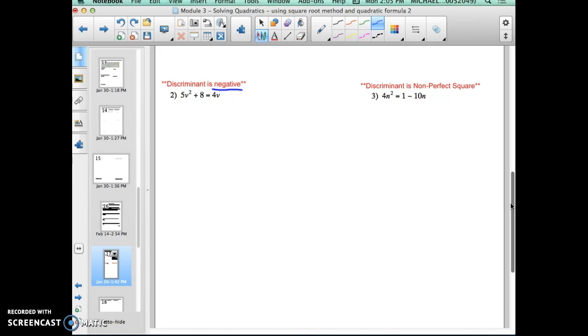All right, so the first step, as always, is to put the equation into standard form. Right now, if I was going to do number three, the equation is not in standard form because standard form, ax squared plus bx plus c, has to equal zero. In this case, it does not equal zero. My quadratic term, 4n squared, is in its right place on the left-hand side, but it equals 1 minus 10n. That tells me I have to move my 1 and my 10n over to the left side so that it equals zero.